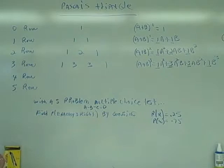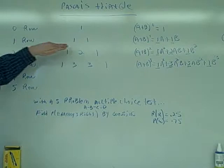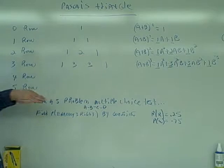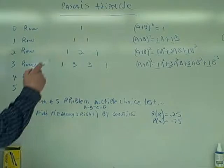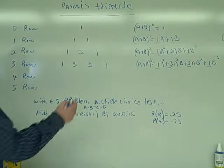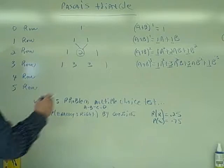We have Pascal's Triangle on the board here. Pascal's Triangle is very interesting and unique. The zero row is just a one. The one row is a one and a one. The two row is a one, two, and a one. And the three row is a one, three, three, one. So you can see that the outer rows are always going to be one, and any number is going to be the sum of the two numbers above it to the right and to the left.